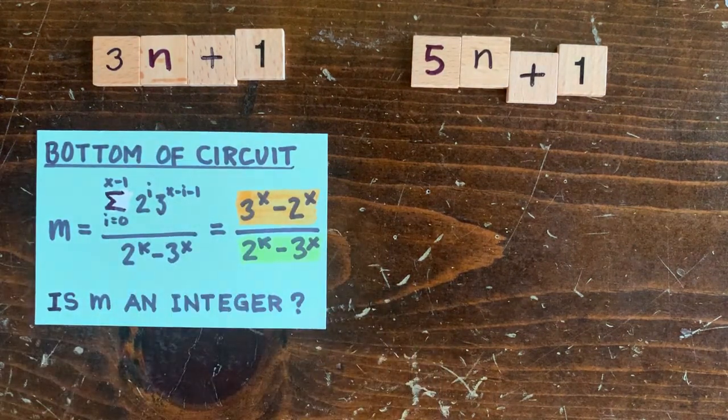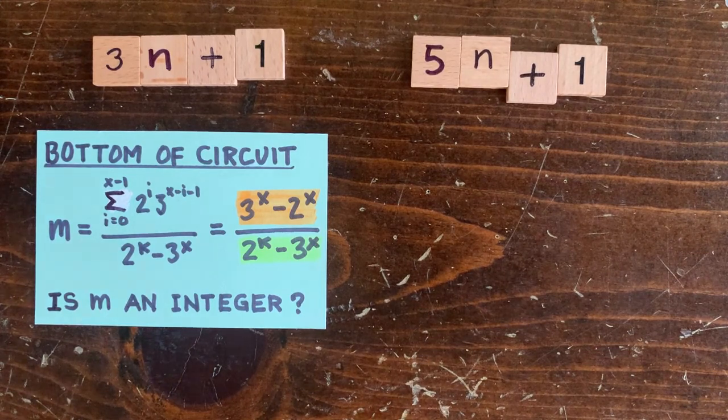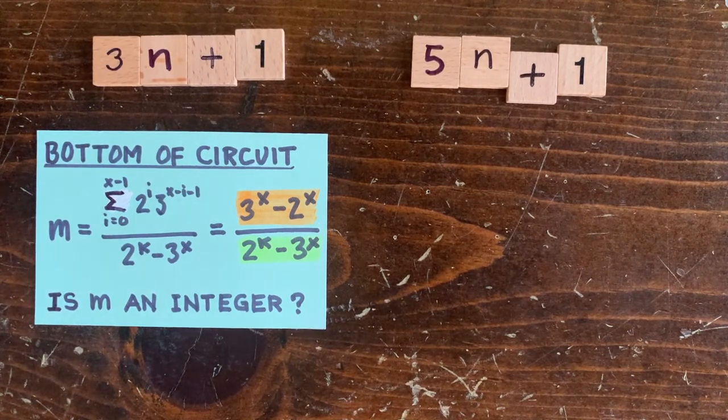So for 3n plus 1, the bottom member of a circuit loop is this, which simplifies to 3 to the x minus 2 to the x over 2 to the k minus 3 to the x.